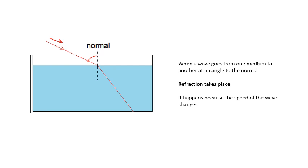And why does it change direction? Because its speed changes. In this case, because it slows down. And because it slows down, this angle here is smaller and it changes direction.